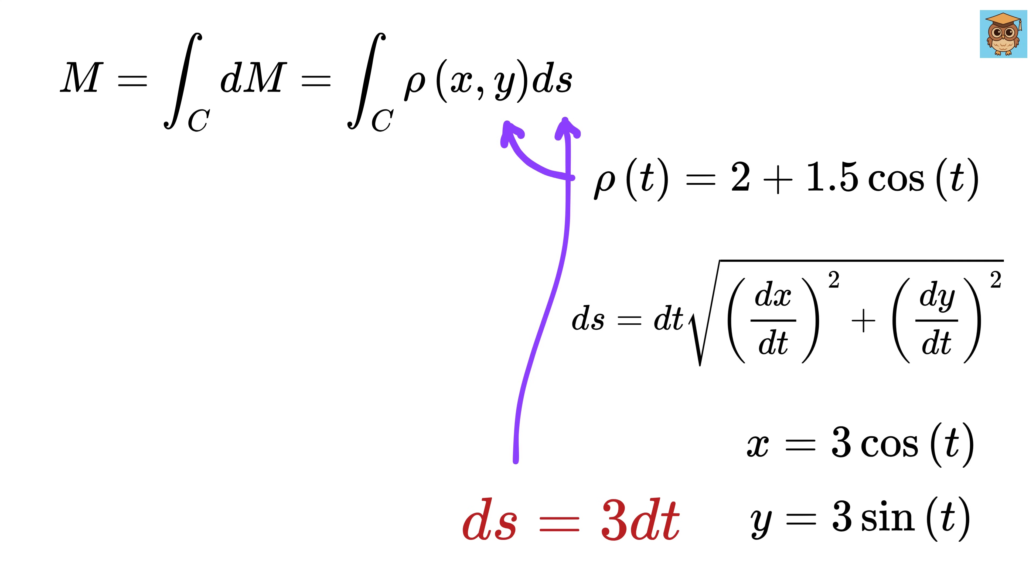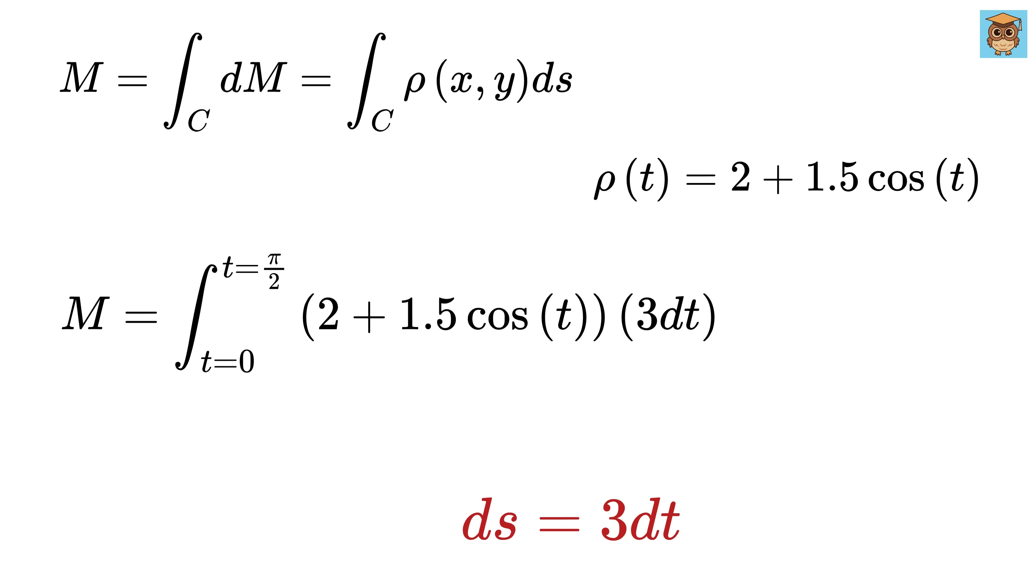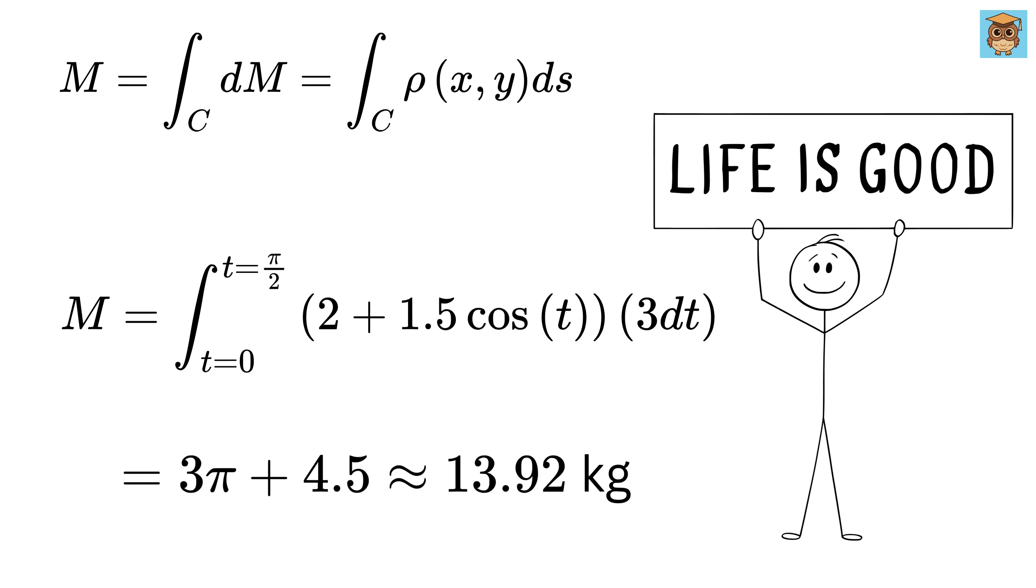Now, let's substitute everything into our line integral. Solving this integral will give us the total mass of the wire along the curved path, which turns out to be 3π plus 4.5, or 13.92 kilograms. Wow! That was super nice!